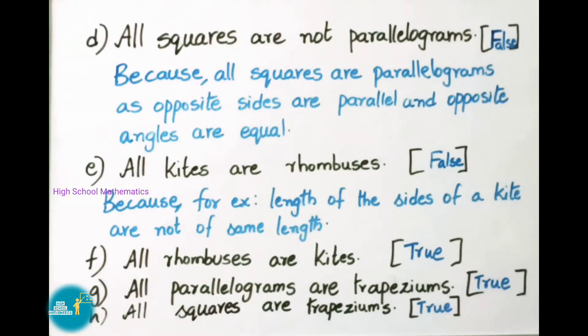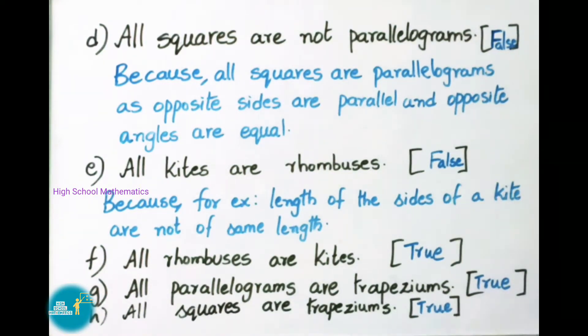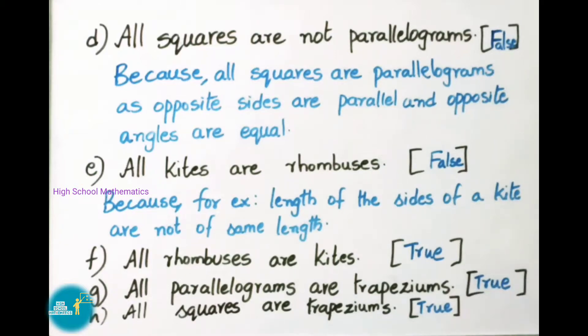Question F: All rhombuses are kites. Yes, it is true. Question G: All parallelograms are trapeziums. Yes, this statement is also true.